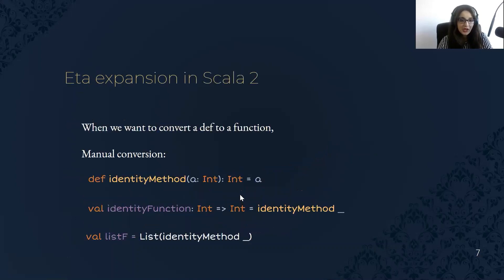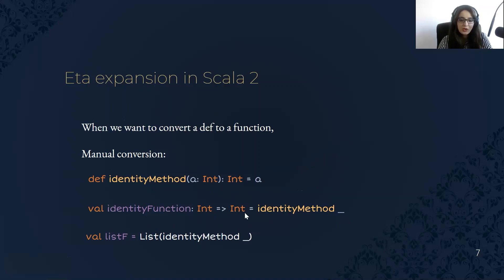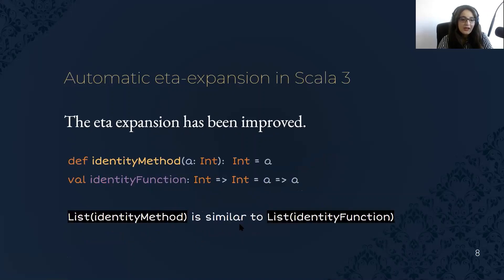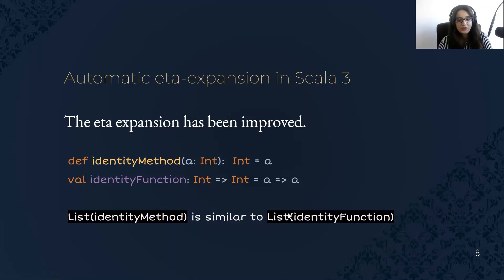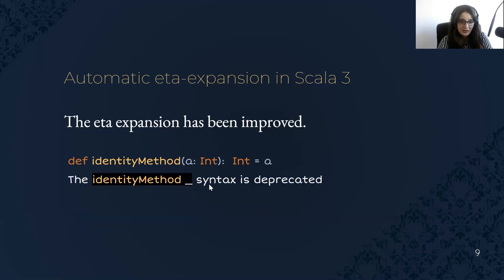There is a mechanism called eta expansion. In Scala 2, we need to do this manually — we add the syntax with underscore and this converts the method to a function. In Scala 3, the eta expansion has been improved. When we call list with the identity method, it will automatically convert it to a function. The syntax with underscore is deprecated.